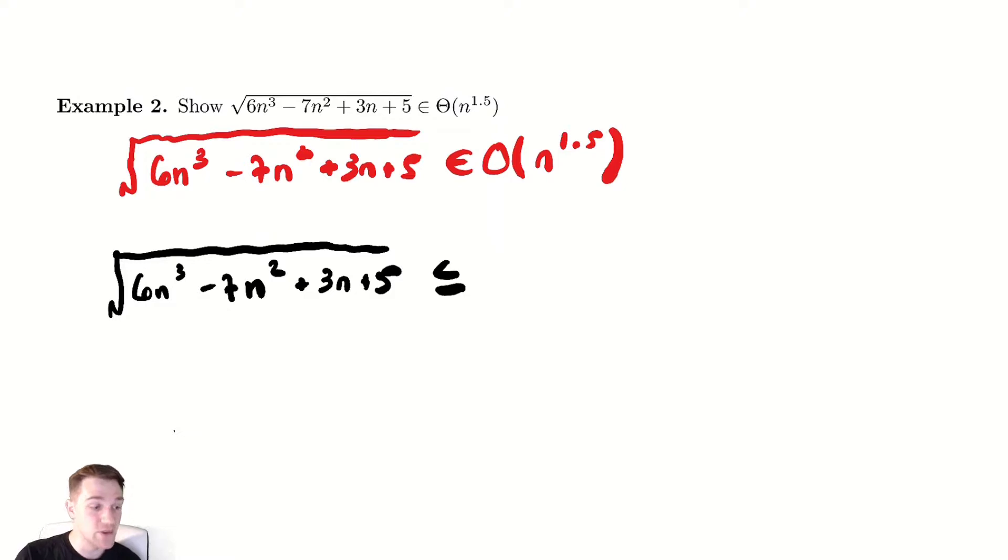And then for the negative term, negative 7n squared, that's universally negative. So if I get rid of it, I'm getting rid of a negative number and therefore making the entire quantity bigger. So I'm going to do the same sort of thing I did before, 6n cubed, but I'm replacing negative 7n squared with zero. It's negative for all values of n or could be zero when we plug in n equals zero. So I can definitely make it bigger by just replacing it with a zero.